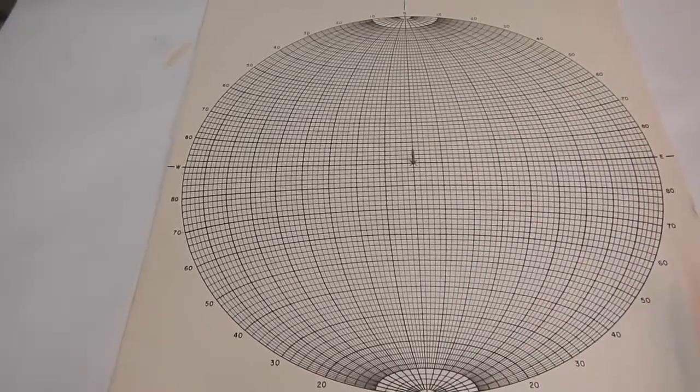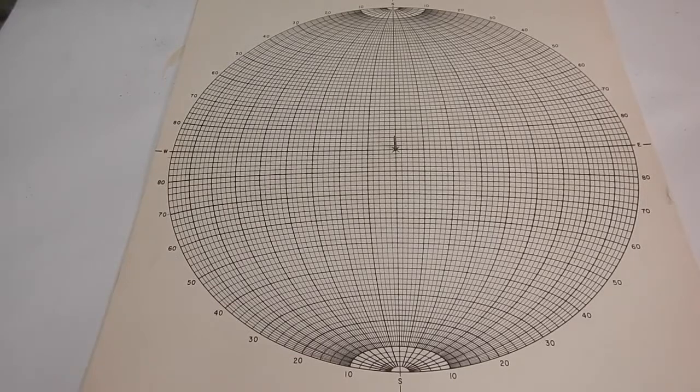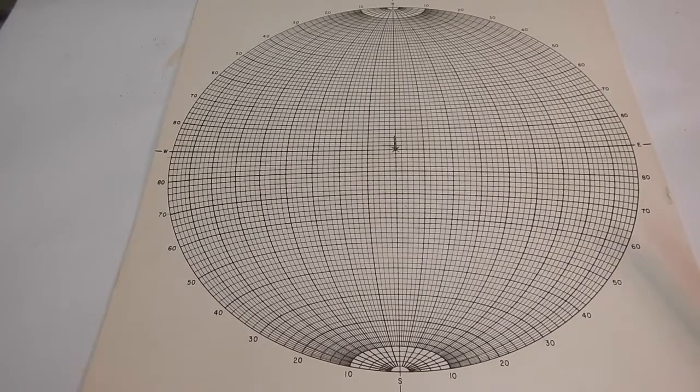So remember, if you're out in the field with a quadrant Brunton compass, and you had a, let's say, azimuth strike of 180, we'll say 160. You would say in quadrant notation, south 20 east. South degrees, 20 degrees to the east.